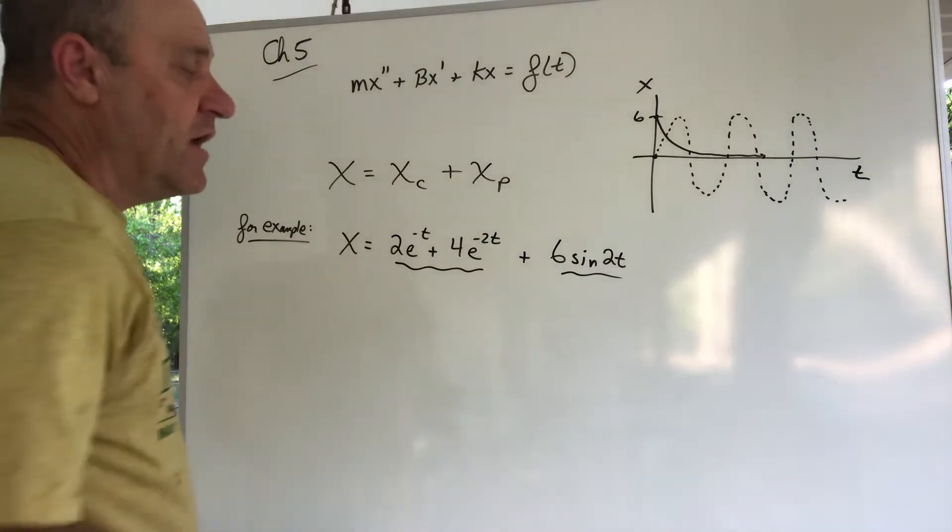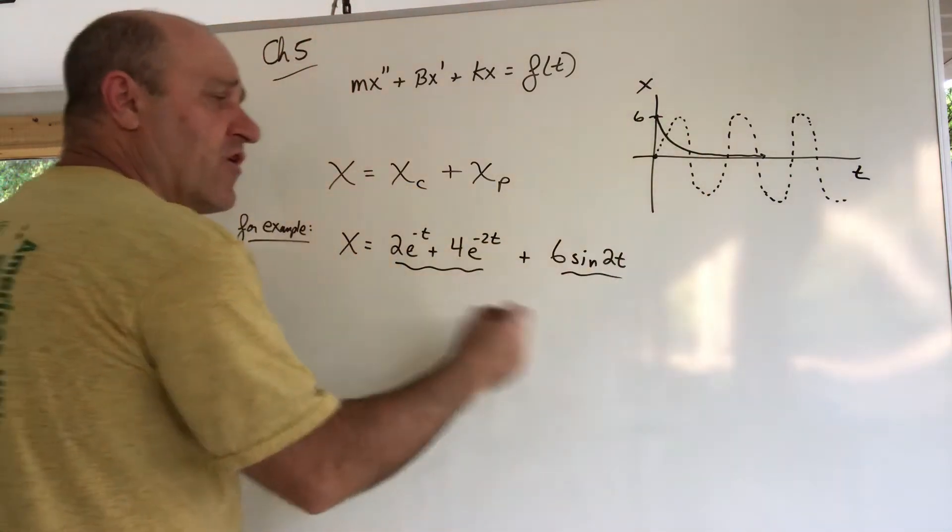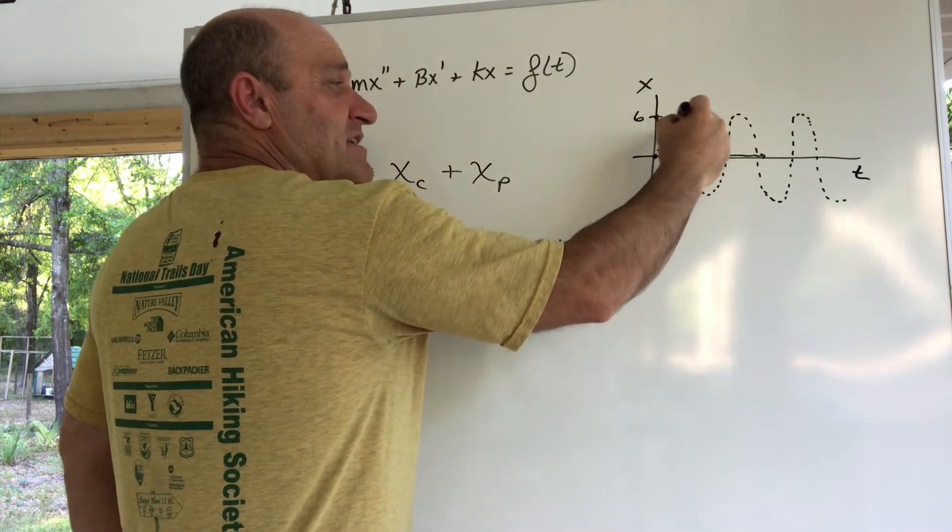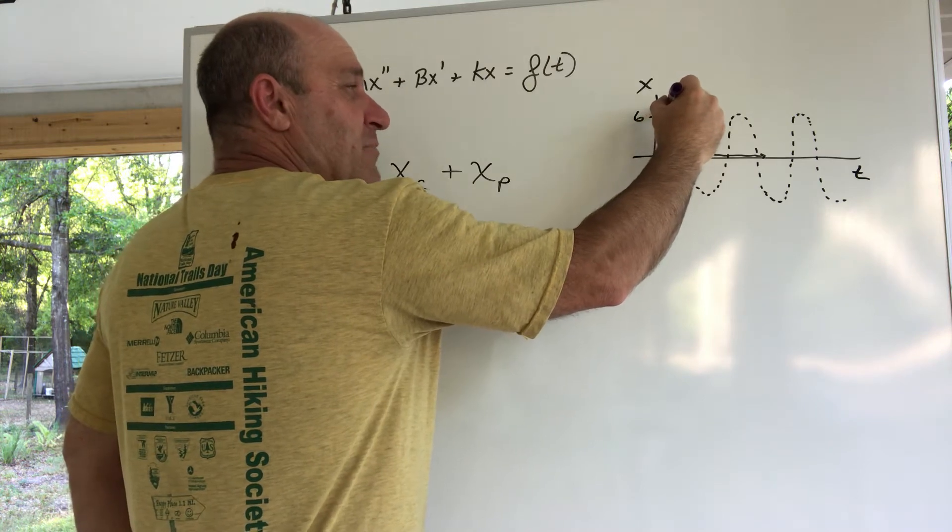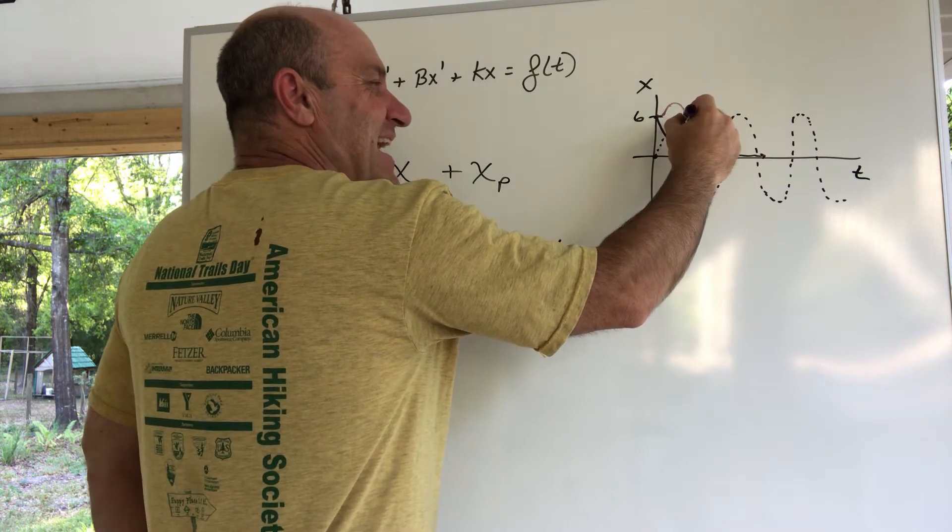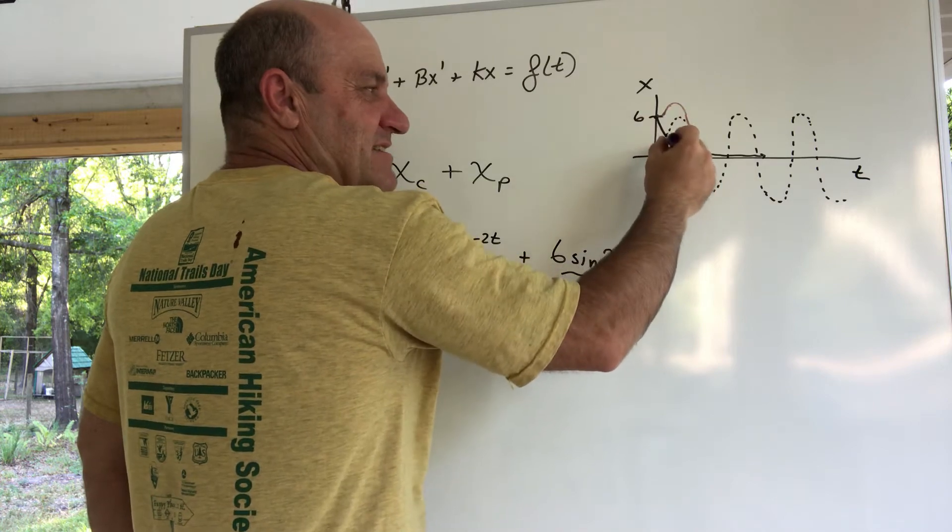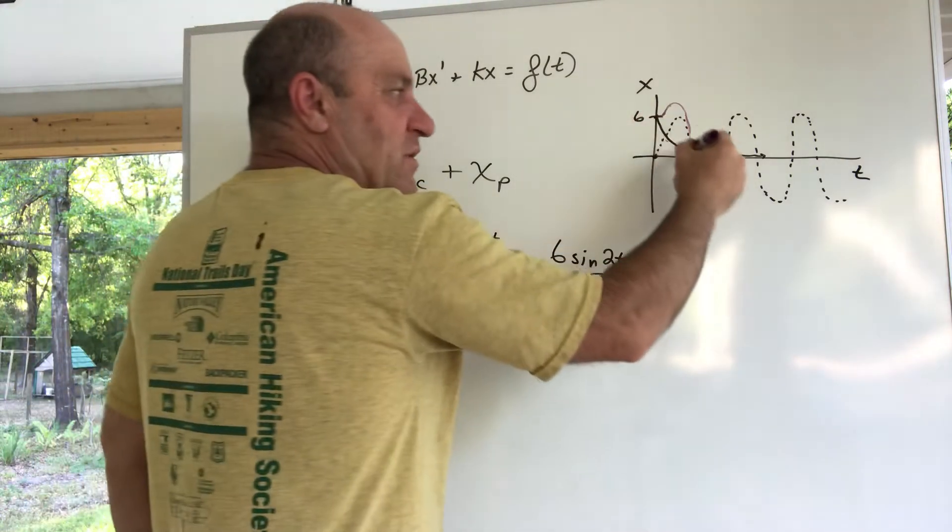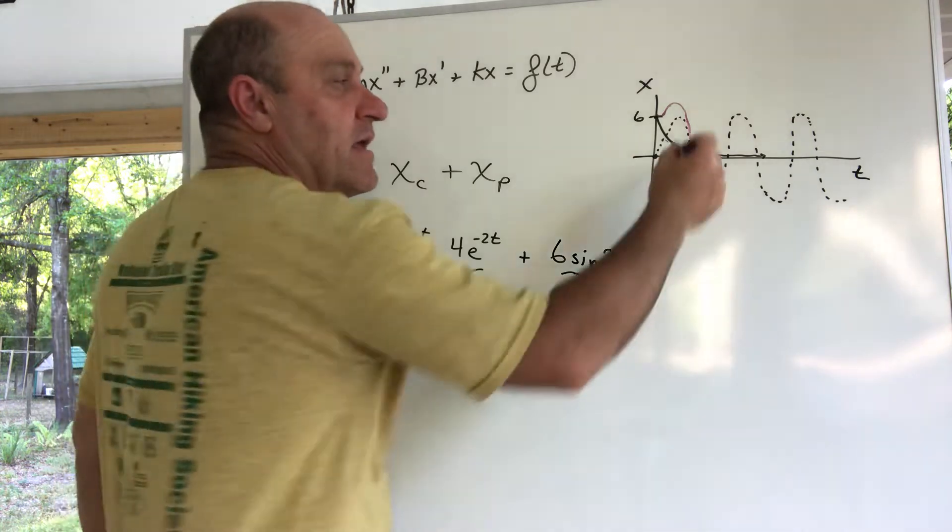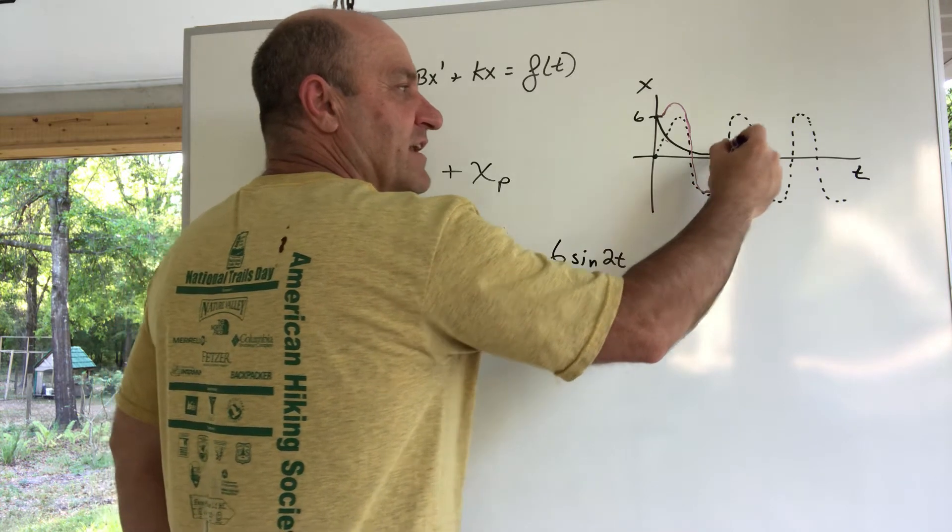Here's the result. Right at the beginning, this xp is influencing this xc, we actually get a little kick, I'm sorry that's down, and then it does this and starts to do this. Notice this xc, the damped part of the problem, is basically going to zero, so it doesn't take long to where its influence on the answer is insignificant. So the graph of the final answer here in purple eventually just looks like this.